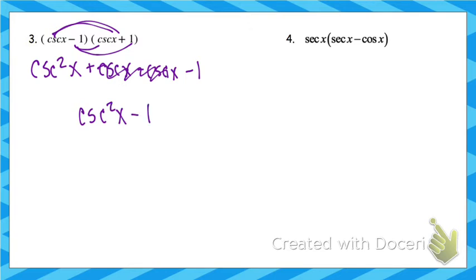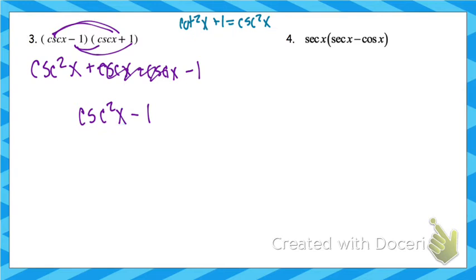So check back at your Pythagorean identities. You won't see this one exactly, but you'll see one you can rewrite. The one that's on your chart is the relevant identity. I can either rearrange it, or replace cosecant squared with cotangent x plus 1 — whichever way makes more sense to you. Cosecant squared minus 1, subtracting 1 from both sides, gives you cotangent squared.